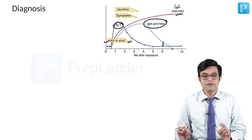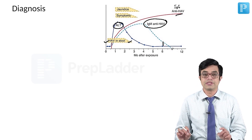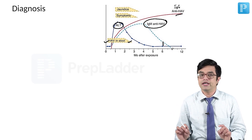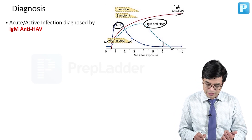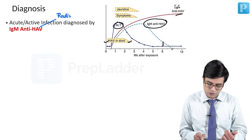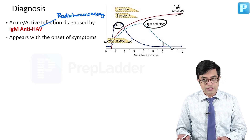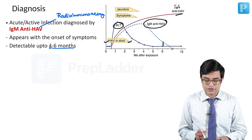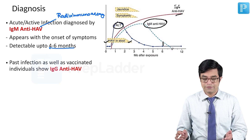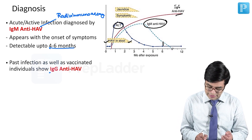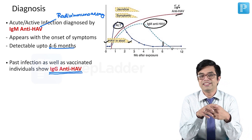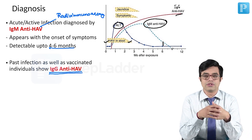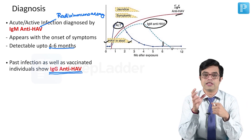The investigation of choice is IgM-HAV antibody, which shows active or acute infection. It can be detected by radio-immunoassay. It appears with the onset of symptoms and is detectable up to four to six months. Past infection as well as vaccinated individuals will show the presence of IgG-HAV antibody. So if a report shows a five-year-old child with IgG-HAV, the diagnosis is either past infection or the patient has been vaccinated — look for vaccination history.